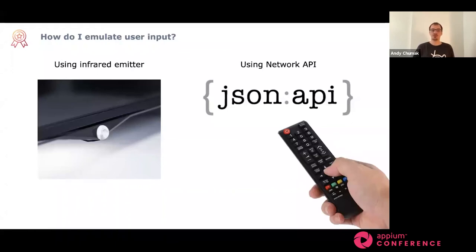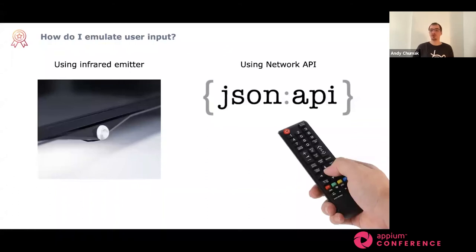Then there is the topic of user input emulation. For most smart TVs it's a matter of sending an infrared signal from the remote control, and we can emulate it in several ways. The most common way is using the network API if the device provides such an API. Smarter devices like Apple TV, Android TV, Roku, and some gaming consoles have APIs so you can just use that — it's very easy and very reliable. The only small issue is that it doesn't cover the whole path of user interaction: you are not sending the actual infrared signal the same way your end user would — you're using some sort of API so it's not exactly the same.